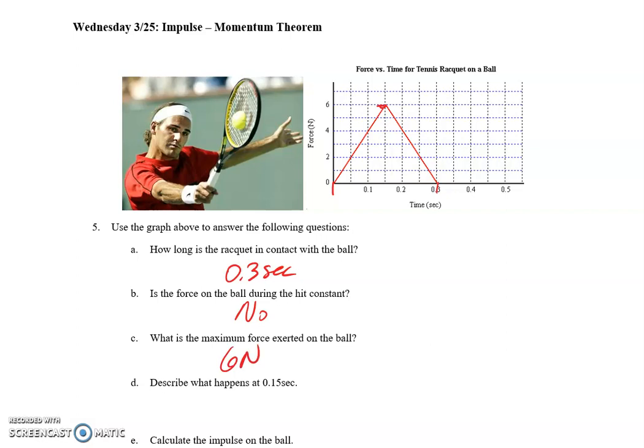What happens at 0.15 seconds? 0.15 seconds is halfway through the hit. So this is when the ball in the first half of the hit is going into the racket, bending the strings back.